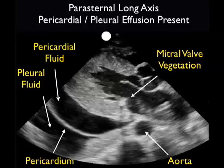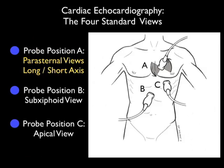In conclusion, the parasternal long axis view of the heart gives a great deal of information about our patient's condition and can be instrumental in emergency care. Through this module, I hope you now have a better idea of how to grade left ventricular contractility from good to poor, and to identify the presence of a pericardial effusion. I hope to see you back as SoundBytes continues and we look further at the cardiac echocardiography examinations.